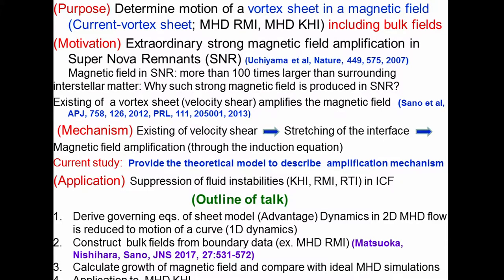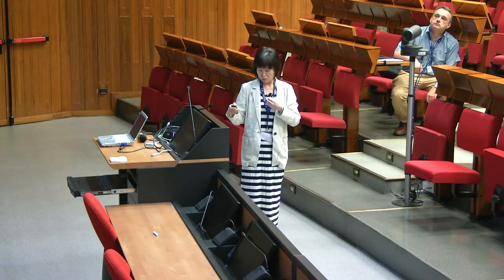The purpose of this study is determining the motion of a vortex sheet in a magnetic field, including bulk field. A vortex sheet in a magnetic field is called a current vortex sheet, such as MHD Richtmyer-Meshkov instability, MHD Kelvin-Helmholtz instability, MHD Rayleigh-Taylor instability, and so on.